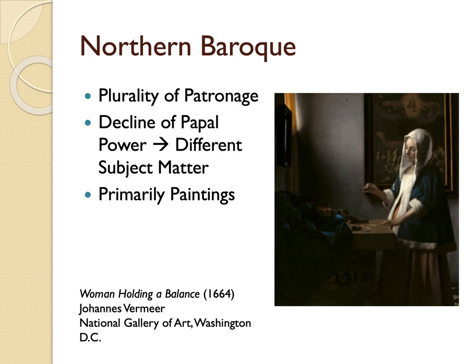Northern Baroque subject matter includes more portraits, landscapes, still life, and different secular scenes. Northern Baroque will primarily be paintings — there was little to no sculpture, since marble sculpture is better suited to a Southern European climate — and no frescoes. These were mostly oil paintings.